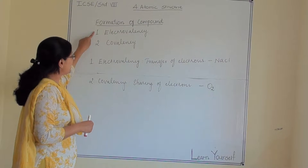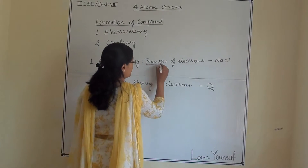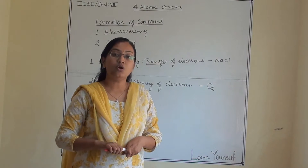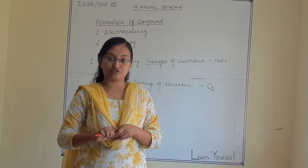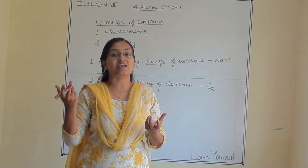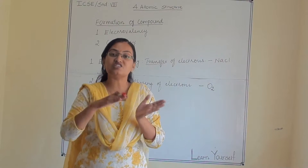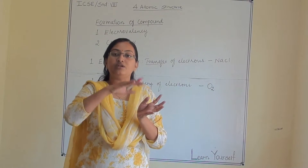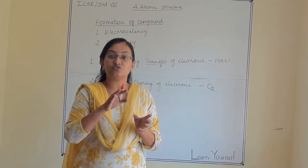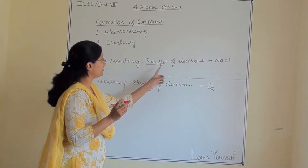So what is electrovalency? Electrovalency is the transfer of electrons. One atom will donate an electron, and at the same time that electron will be accepted by another atom. So one atom is donating and the other is accepting — that is the transfer of electrons.